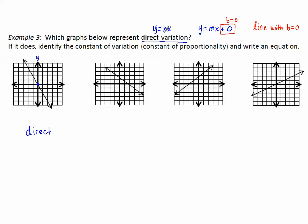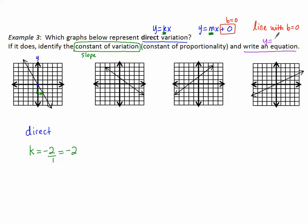Remember that k is like the slope. If I'm supposed to identify the constant of variation, that's like looking for the slope. Picking another point, it looks like I'm going down 2 and over 1, so k, or the slope, is negative 2. Negative 2 over 1 simplifies to negative 2. The equation is y equals kx, and once I know k is negative 2, my equation is y equals negative 2x.